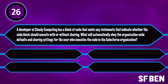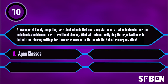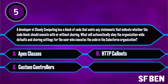A developer at Cloudy Computing has a block of code that omits any statements indicating whether the code block should execute with or without sharing. What will automatically obey the organisation-wide defaults and sharing settings for the user who executes the code? Is the correct answer A: Apex classes, B: HTTP callouts, C: custom controllers, or D: anonymous blocks?